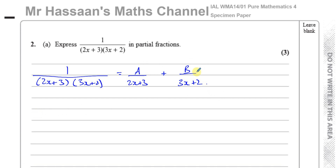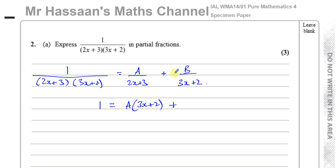To find the values of A and B, I'm going to multiply both sides of the equation by the LCM of the denominators, which is (2x + 3)(3x + 2). On the left side they cancel, leaving the numerator 1. On the right, multiplying gives A(3x + 2) plus B(2x + 3).